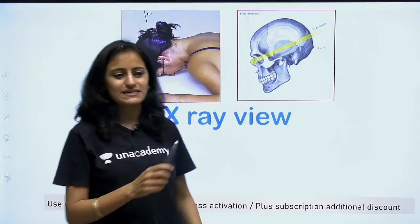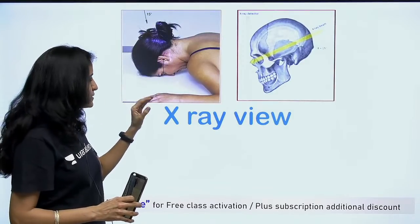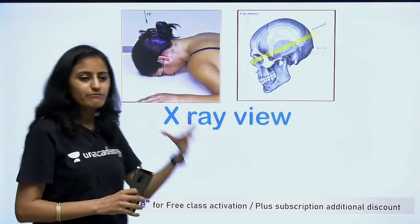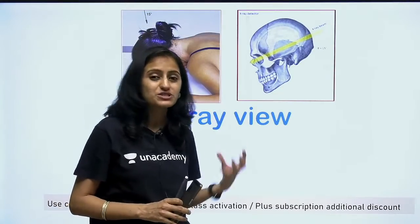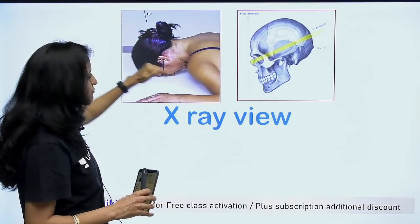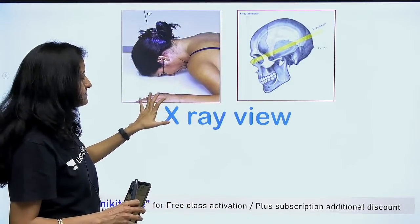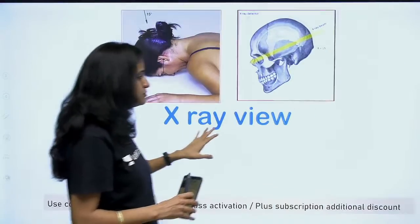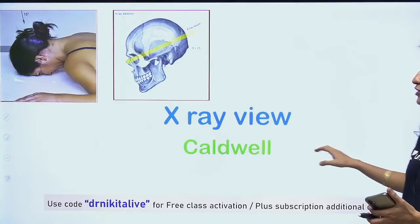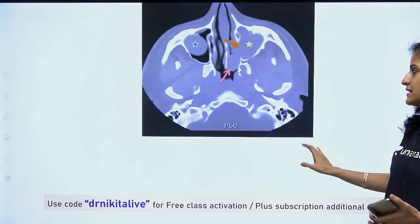Next X-ray view — what do you think is this X-ray view? Here we are seeing the forehead and the nose. If I ask you for which paranasal sinus this X-ray view is best, you can see that it is going in the frontal region — occipitofrontal. That is your Caldwell view. This X-ray view is your Caldwell view, and it is the best X-ray view for your frontal sinus.